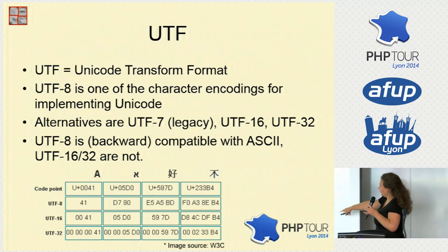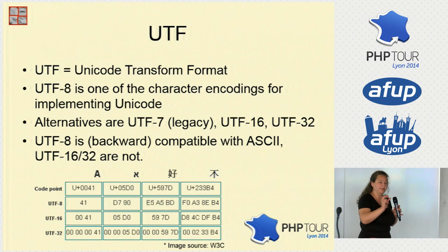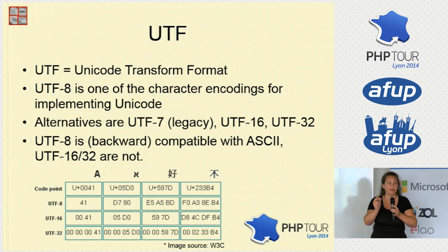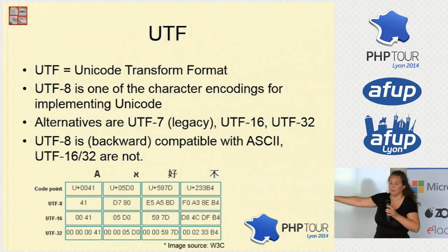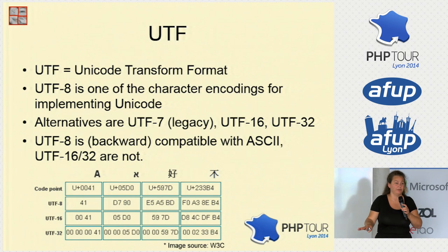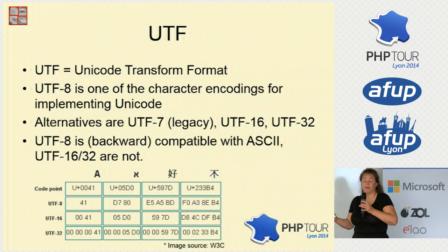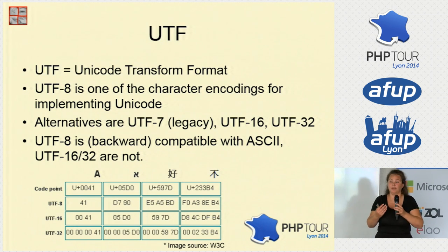UTF-8 is in general the easiest to work with and is recommended because it's compatible with ASCII, making migration from legacy systems a lot easier. Looking at the different encodings, UTF-8 has a variable size — it can be one to four bytes depending on the character and where it's mapped in the code page. With UTF-16, it can be either two or four bytes; with UTF-32, it's always four bytes. So for your database size and application size, this makes a difference. UTF-8 might sometimes encode a character with more bytes than UTF-16, but it is a flexible byte-sized format.